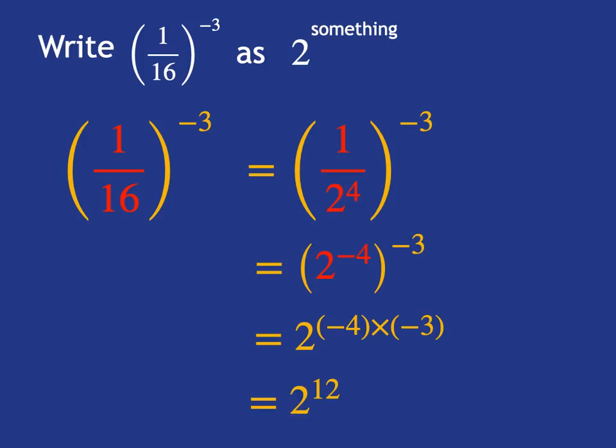Which will be 2 to the power of 12. If we work out 2 to the power of 12, we'll get 4,096, but that isn't actually what we were asked to do. We were just simply asked to rewrite it as 2 to the something, so it is 2 to the 12.